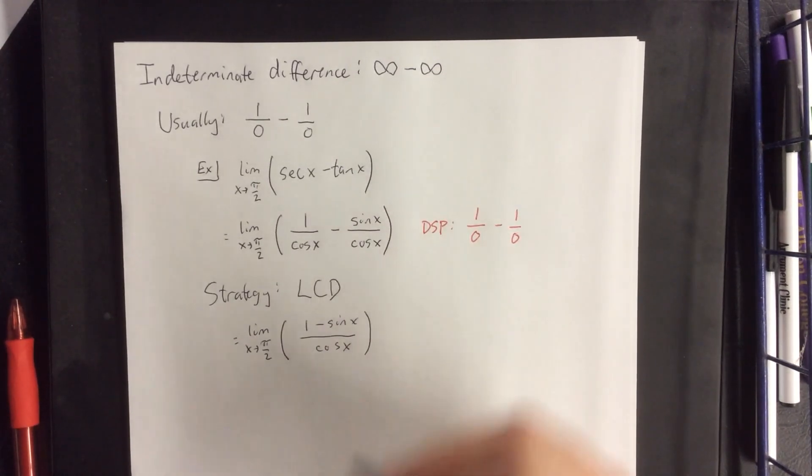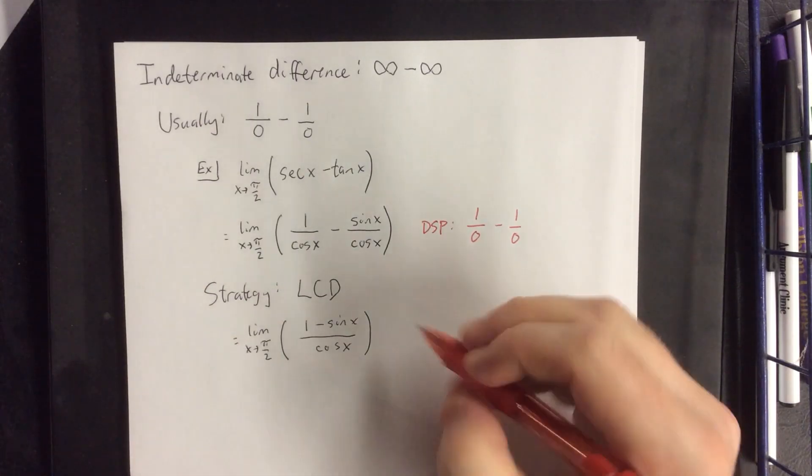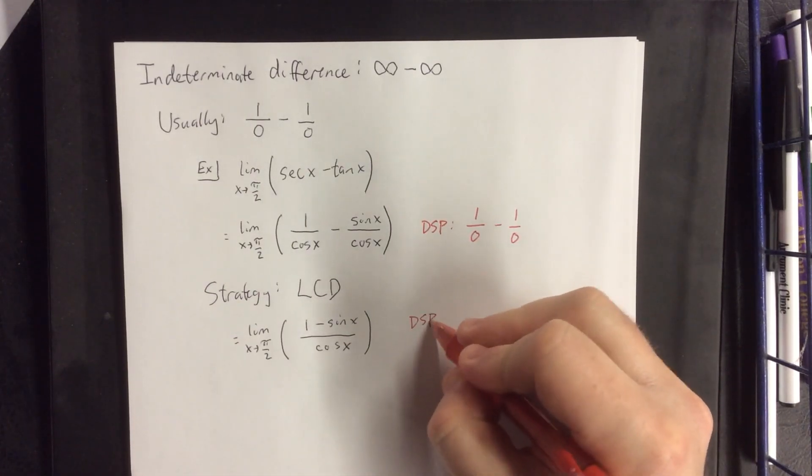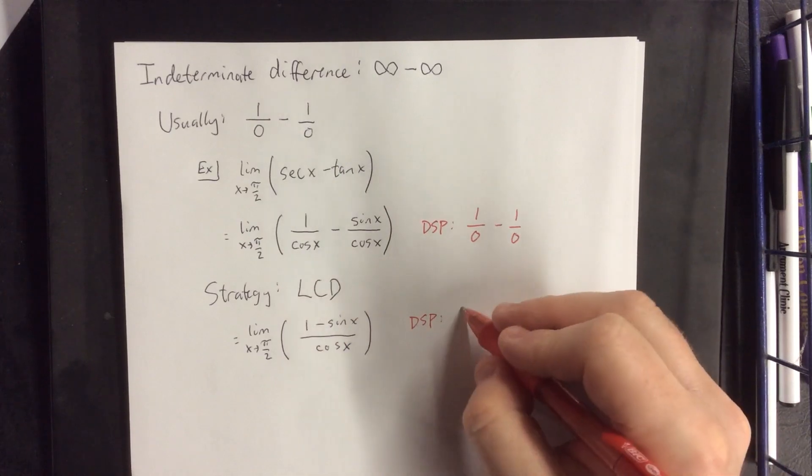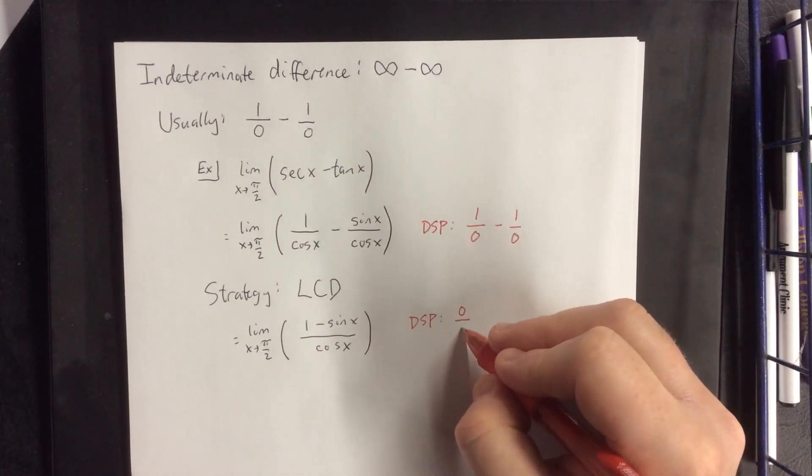As soon as you've done this, if you attempt to use the direct substitution property once more, your numerator is going to be 1 minus 1, and your denominator is going to be 0.